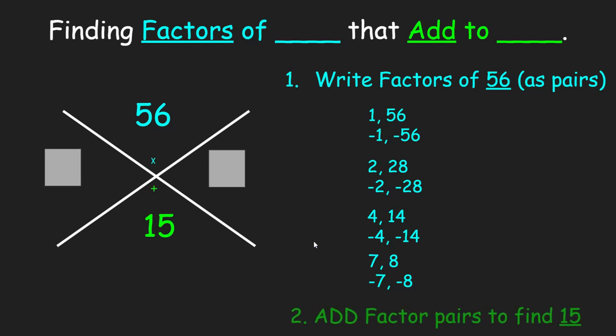Now the second step is to add the factor pairs to find 15. In this video I am going to be adding them all up, even when I do finally find 15, just to show you what you need to do. So I'm first going to add 1 and 56 and negative 1 negative 56. 1 plus 56 is 57, negative 1 plus negative 56 is negative 57. Both of those are not what we want, so let's keep going.